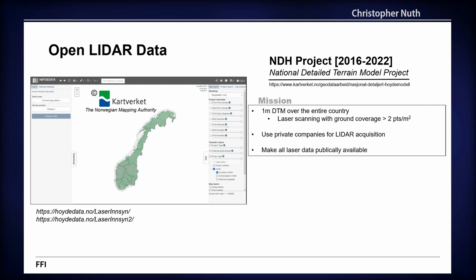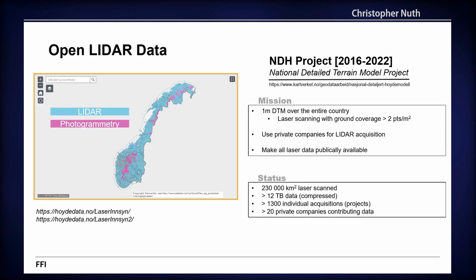You can go onto two different websites and search the archive and just download laser data — you may need to register, or maybe not. Currently, as of last week, this was the coverage. The majority is LiDAR, but there are areas where they only do photogrammetry because there's not much vegetation. Status today: 230,000 square kilometers are laser scanned.